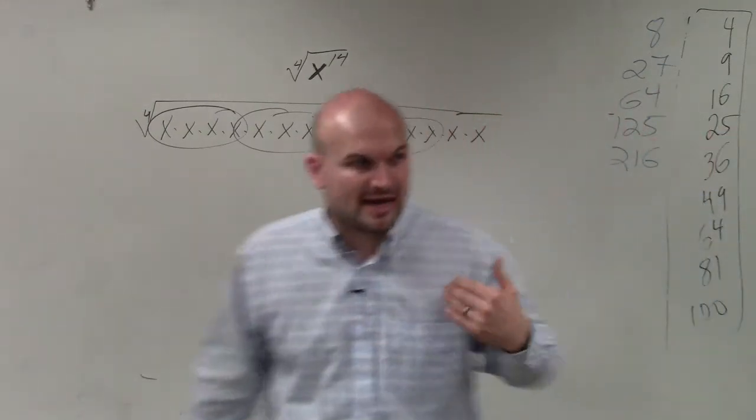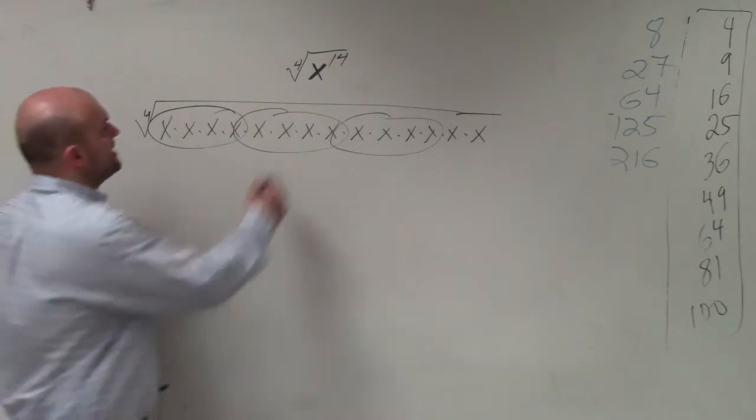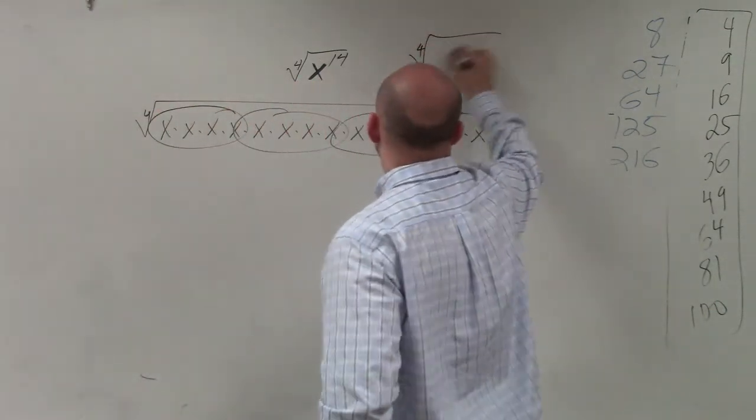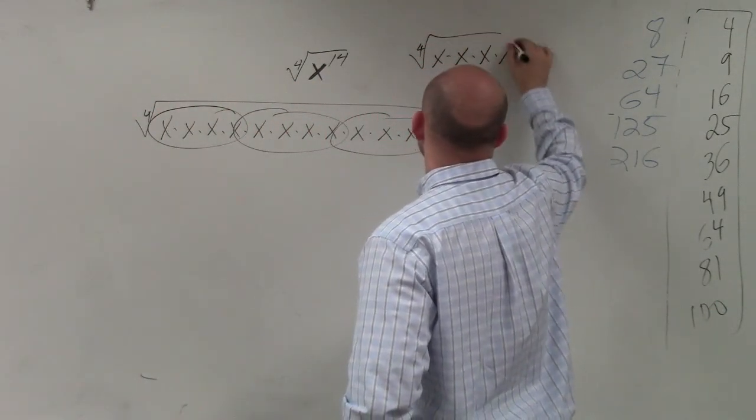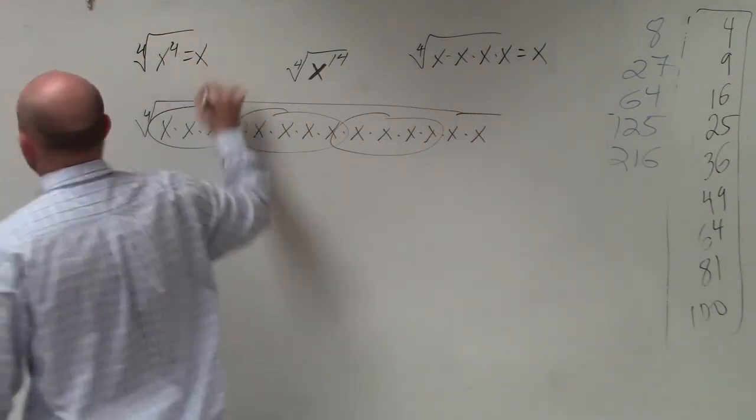But the next way that I also showed you guys is you can also take, I can rewrite this. I know that the 4th root of x times x times x equals x. I also know that the 4th root of x to the 4th equals x.